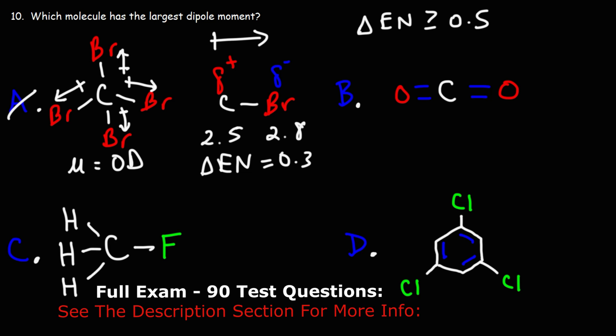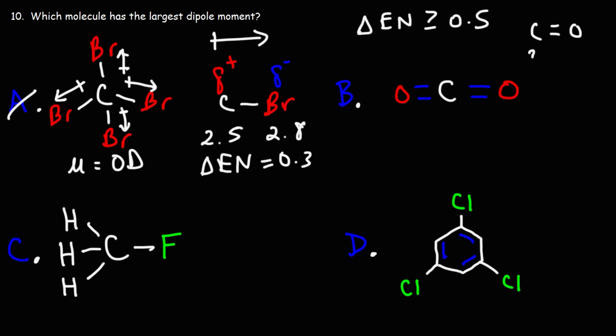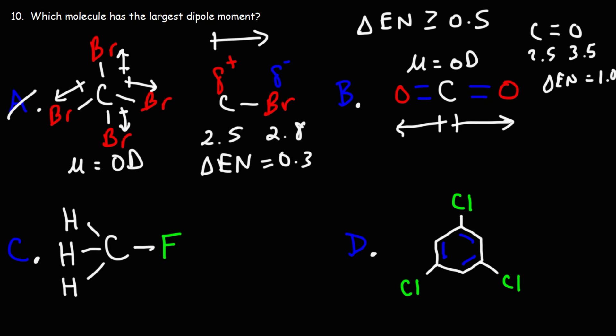Now looking at answer choice B, carbon dioxide. The carbon-oxygen bond is highly polar — oxygen has an electronegativity value of 3.5, so the difference is 1.0, making it a polar bond. But the dipole moments cancel because there are two carbon-oxygen bonds pointing in opposite directions, so there is no net dipole moment. Even though this molecule has polar bonds, the molecule overall is nonpolar because the dipole moments cancel.